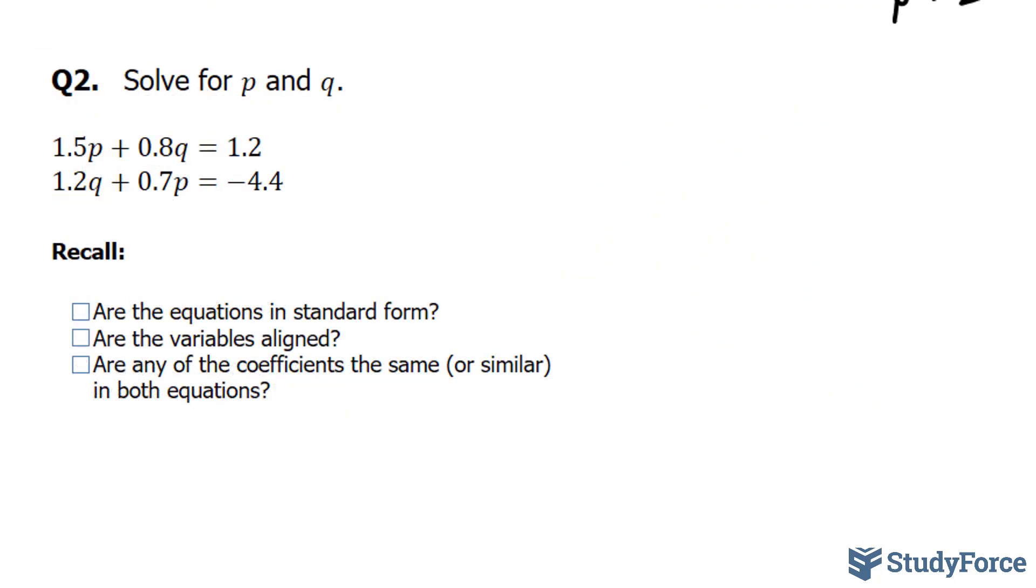In question number 2, we're asked to solve for p and q, and we have these two equations with p and q as their unknowns. We'll begin with our checklist. Remember, we cannot proceed on to elimination unless these three things are checked. First question is, are the equations in standard form? And they are in standard form. Notice that both p and q in both of the equations are exclusively on the left side, and on the right side we have our constants. So I'll place a check there.